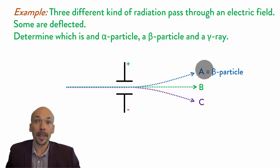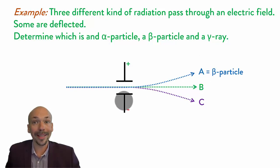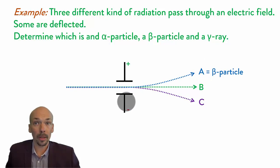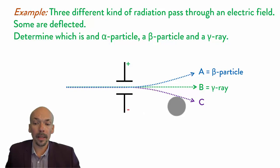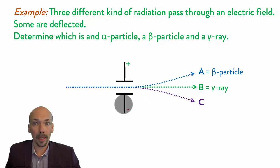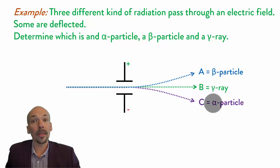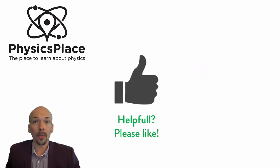The next one is not attracted or deflected by any of the charges, so it doesn't have a charge of its own — it's a gamma ray. And the last one is deflected by the positive charge and attracted by the negative charge, so it has a positive charge — it's an alpha particle. You should now know the three different kinds of radiation and their properties. If you found this video helpful, please let me know by liking, and don't forget to subscribe for more videos. Thanks for watching.